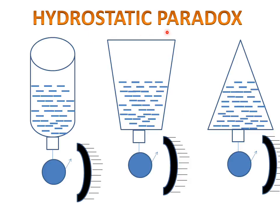Hydrostatic paradox says that the pressure of the liquid depends on the height of the liquid, not on the shape of the vessels.